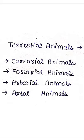Hello friends, in this video I will talk about the different types of terrestrial animals. The first type is cursorial animals. Cursorial animals are those animals which are adapted for running at a very high speed.